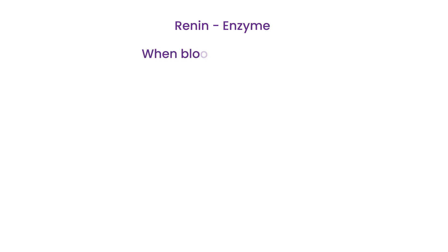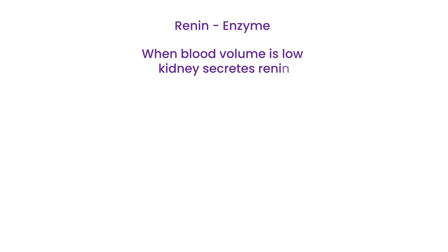Another molecule I'd like to talk about is renin. Renin is an enzyme that comes from the kidney. When the kidney senses that blood volume is low, it will secrete renin, and renin through a long, complicated process eventually leads to aldosterone being secreted from the adrenal cortex.